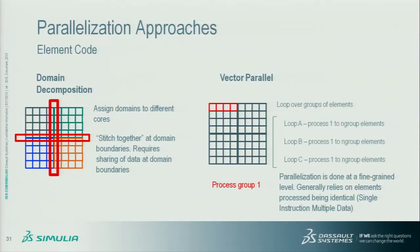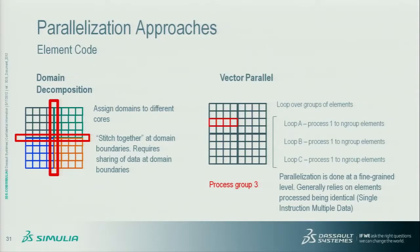A key characteristic of the Explicit element code — partly because it was written for Cray architectures — is that it is coded as a series of loops that process what's called an 'N group' of elements. Essentially, you can process however many elements you want in a shot. You have a number of loops, each processing a group of elements: take the first four elements, process all of them in loop A, go to loop B, go to loop C, those elements are done, then move to the next set. With the right parallelism, those elements are all processed at once — a 4-way vector parallelism gives 4x speedup.